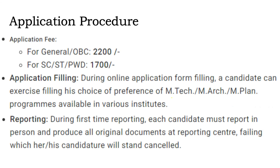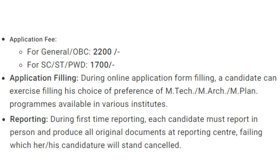Here is the application procedure. The application fee for General and OBC category is ₹2200 and for SC/ST/PWD categories it is ₹1700. During online application form filling, a candidate can exercise their choice of preferences of M.Tech, M.Arch, and M.Plan programs available in various institutes. During first-time reporting, each candidate must report in person and produce all original documents at the reporting centre.